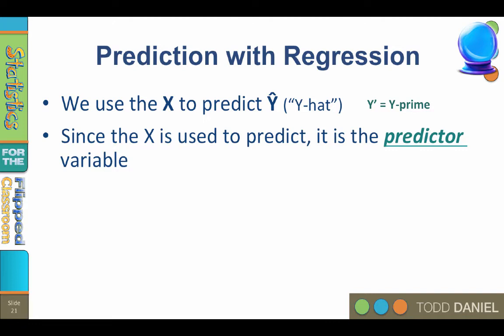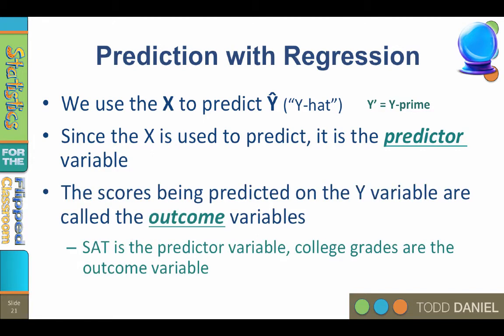Since x is used to make predictions, it is the predictor variable, also known as the explanatory variable, regressor variable, or independent variable. The score being predicted for the y variable is the outcome variable, also known as the criterion variable, target variable, or dependent variable.